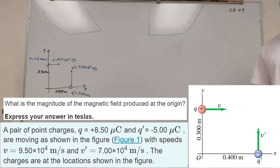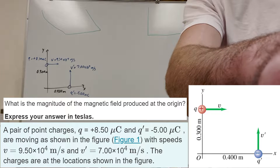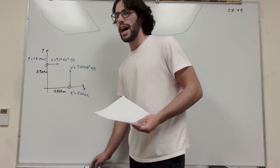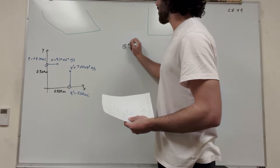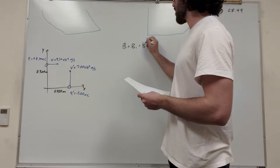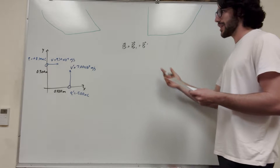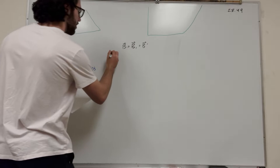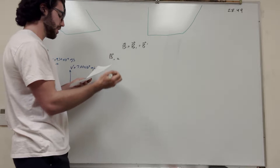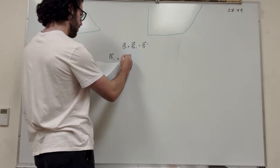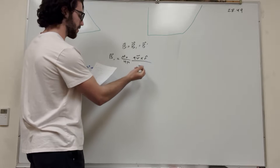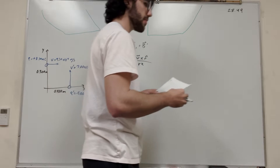So let's get started on that. If we're finding the magnetic field at the origin, each of these two charges are going to add some sort of magnetic field at the origin. So we're going to have to add B1 — that's what we'll label the first one — and B prime for the second one. So we need to find both of these. Let's start by finding B1. What's the equation for the magnetic field due to a charge? It's going to be U-naught over 4-pi, times Q-V (the vector) crossed with the unit vector for the radius, over R squared.